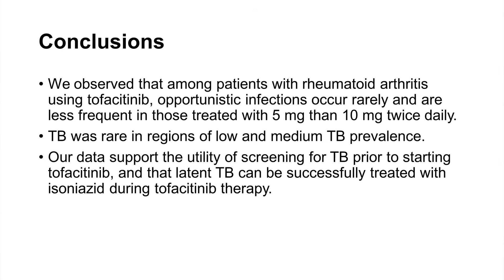In summary, within the global tofacitinib RA development program, we observed that opportunistic infections among patients receiving tofacitinib occurred fairly rarely and were less frequent in patients using the 5 mg twice daily dose. Furthermore, TB was rare in regions of low and medium TB prevalence. And most importantly, our data support the utility of screening for TB prior to tofacitinib start and that patients with latent TB can be successfully treated with isoniazid and tofacitinib together.